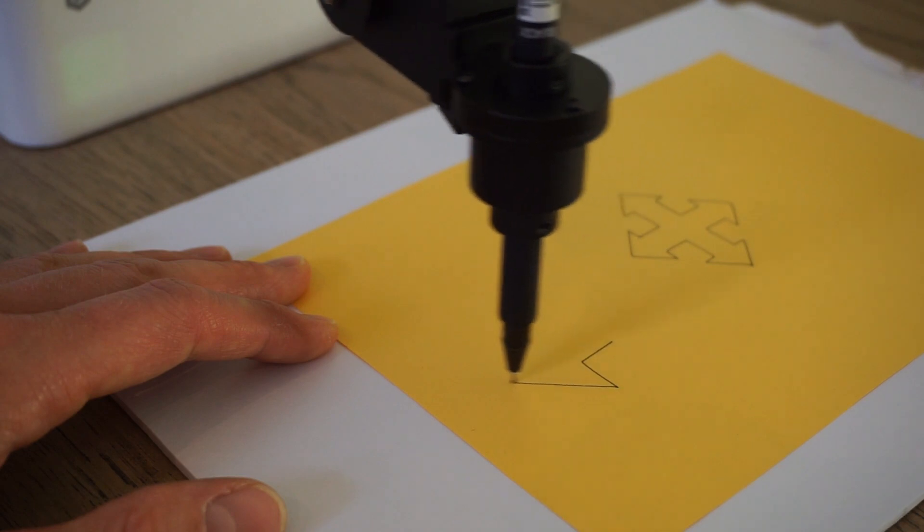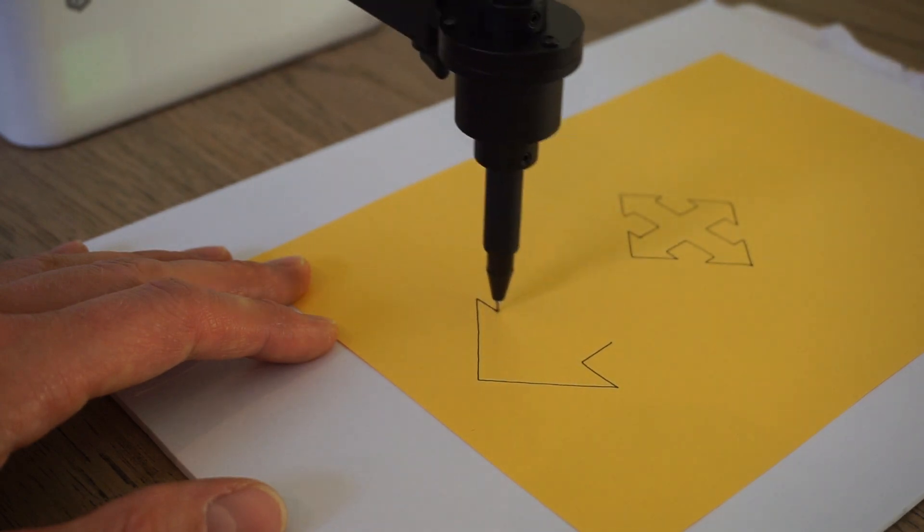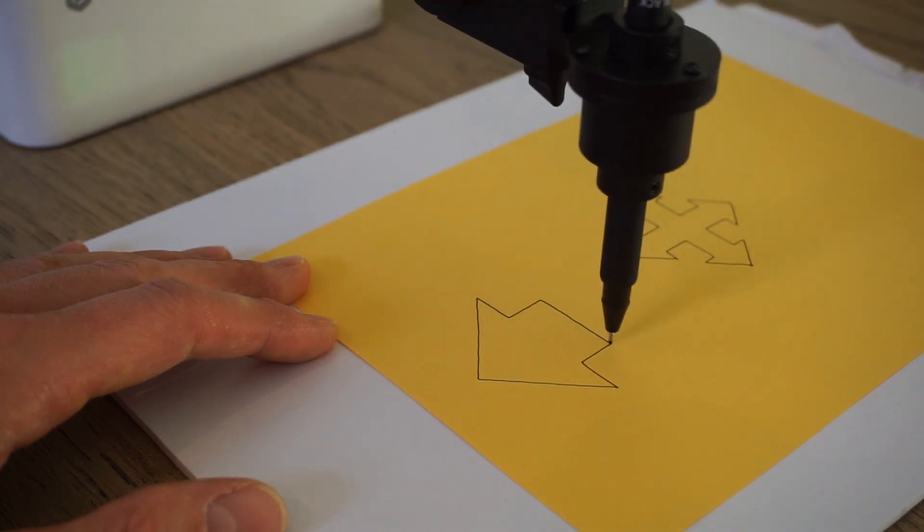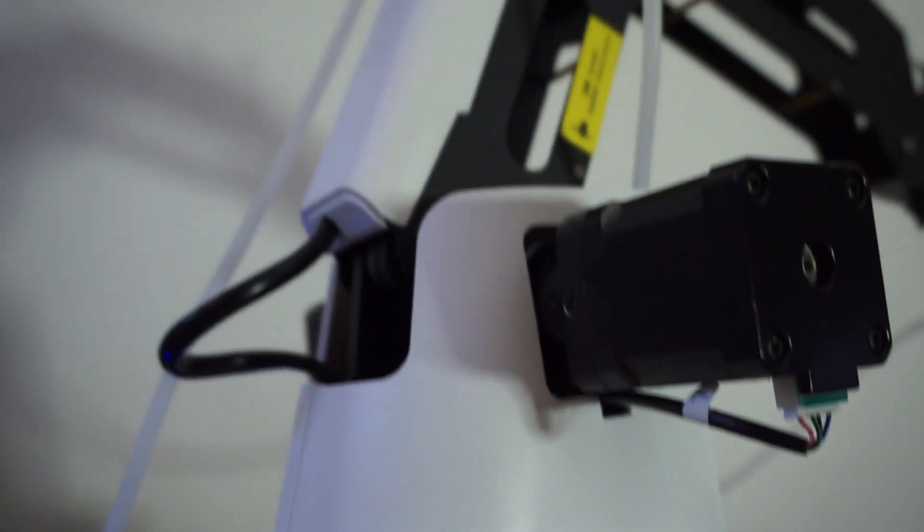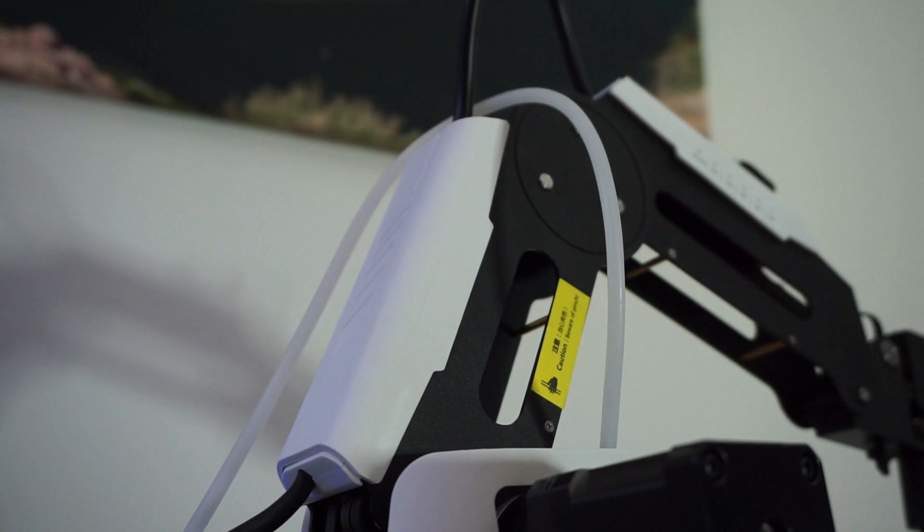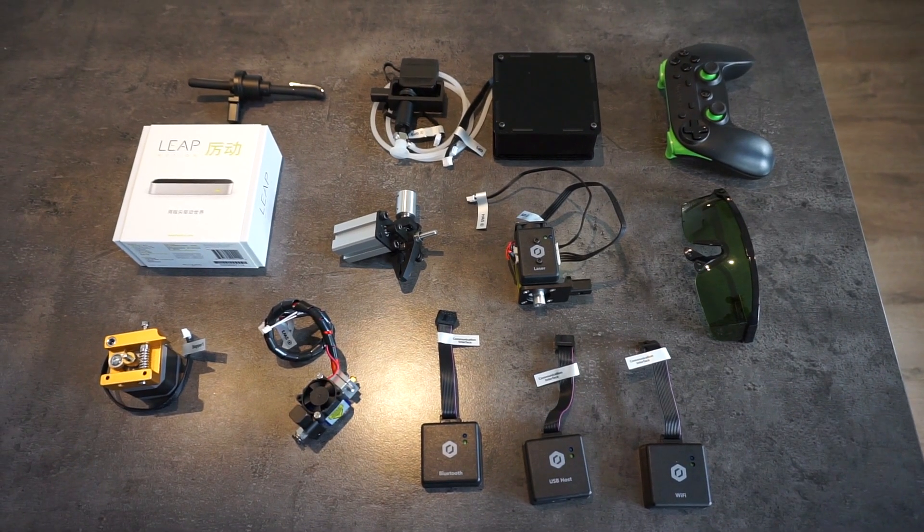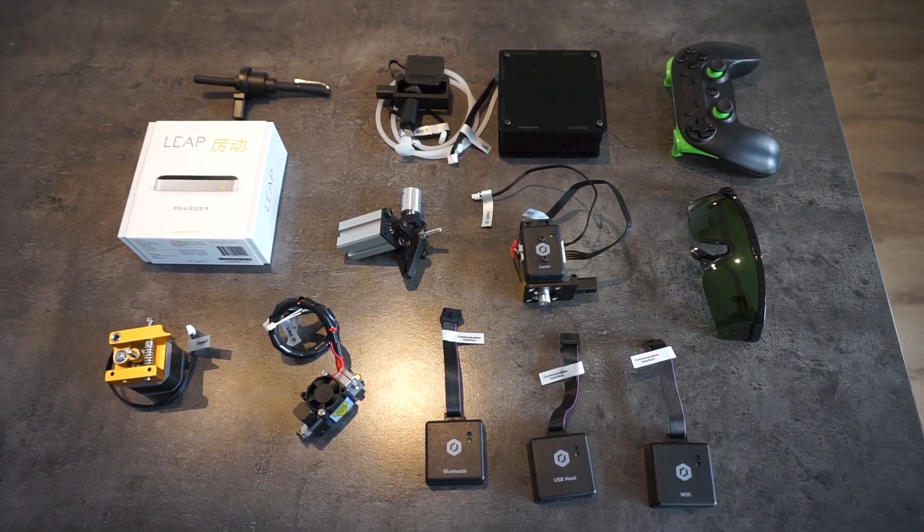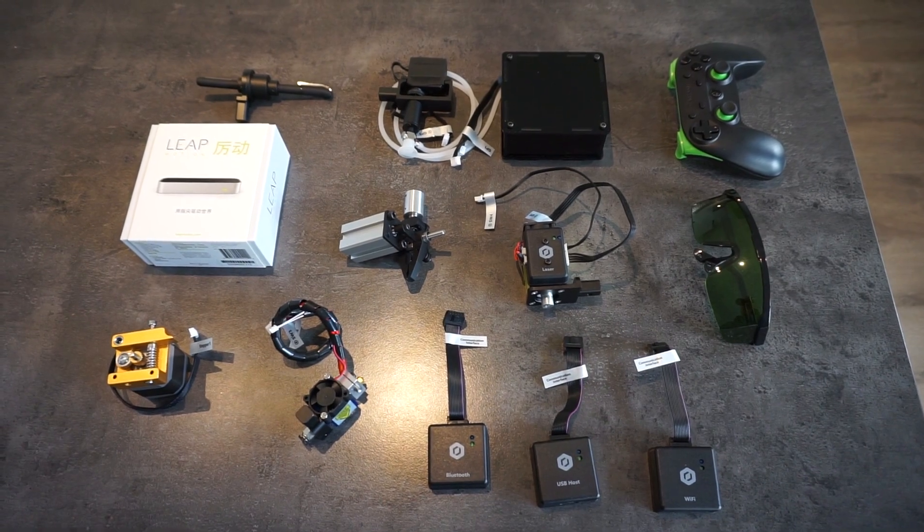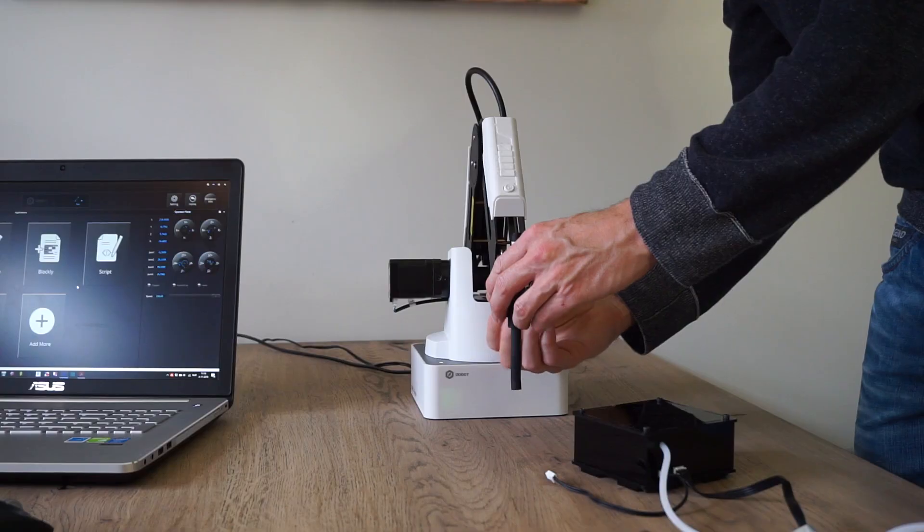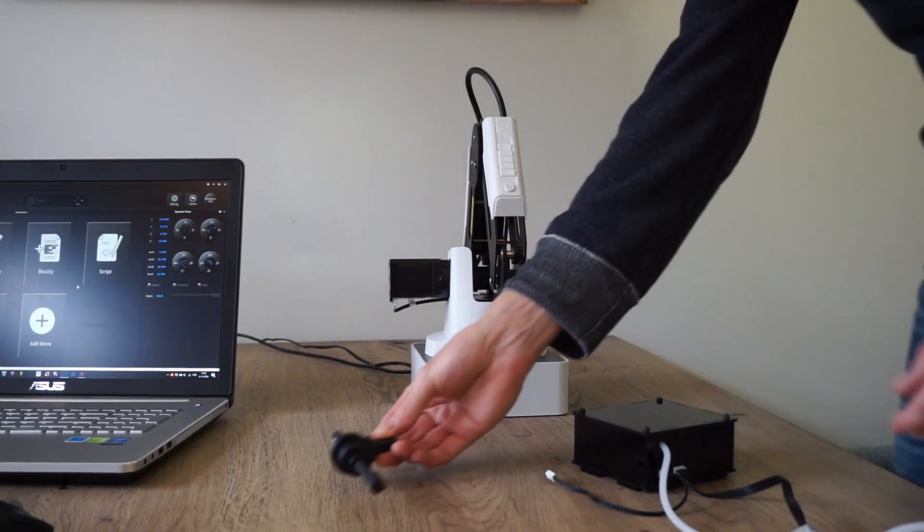I ordered the advanced educational plan version of the Dobot, which is the most complete package. The basic model comes supplied with a suction cup, a gripper, a drawing kit, a 3D printing kit, and a bluetooth module. In addition to that, the educational plan includes a laser engraving module, a wifi module, and a game controller for manually operating the robot arm.